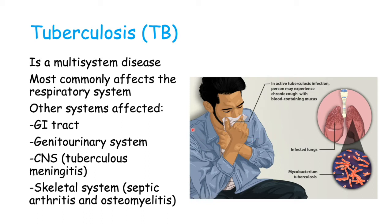Some of the other systems affected include the GI tract, the genitourinary system, the CNS — causing tuberculosis meningitis — and the skeletal system, causing septic arthritis and osteomyelitis.